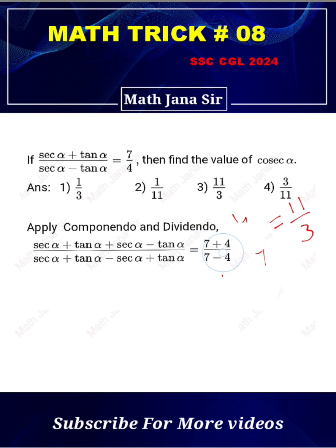Here in the numerator tan α and tan α cancel, and in the denominator sec α and sec α cancel. The remaining portion is 2 sec α divided by 2 tan α which is equal to 11/3.